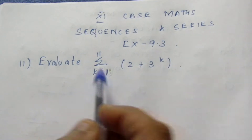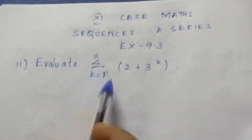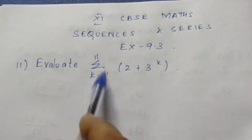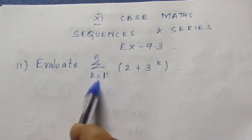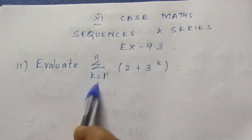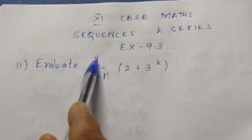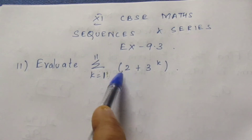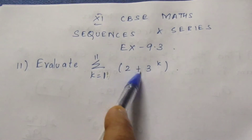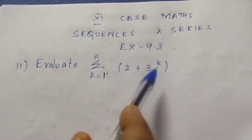Evaluate the summation k equal to 1 to 11 of 2 plus 3 power k.